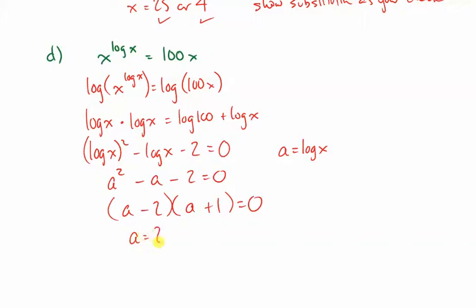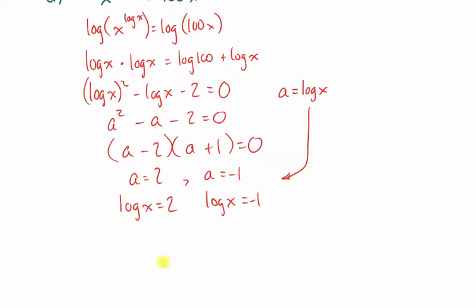Or, a equals 2, a equals negative 1. But now let's substitute what a equals. a is actually log x. Log x is 2. Log x is negative 1. I'm not done. I need x. I'm going to think of a logarithm as an equivalent exponential. The base is 10.